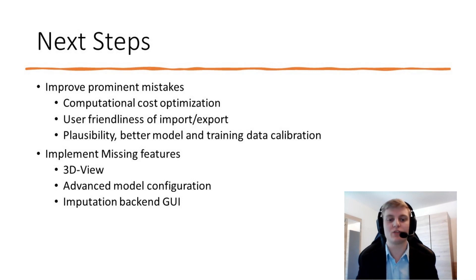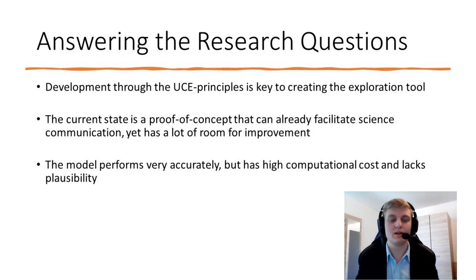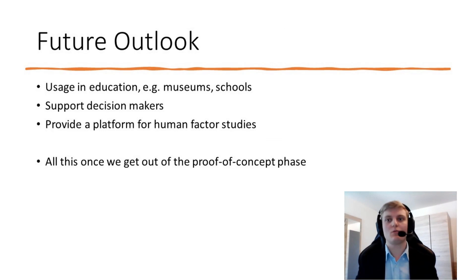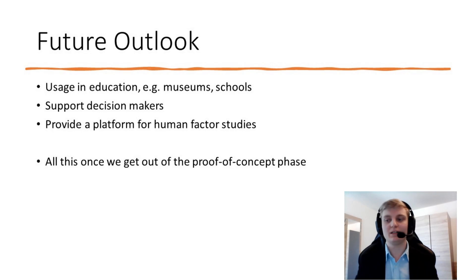Now let us answer the research questions. Such a project can only be developed by people like us — who aren't strict experts in geography and biology — using user-centered engineering principles, working tightly together with experts in the field. The current state of our solution is clearly a proof-of-concept. While it can already facilitate science communication to some degree, it still has a lot of room for improvement. The model performs very accurately but has high computational cost and lacks plausibility. Looking ahead, we think about using the software in education, for example in museums or schools, as a platform for human factor studies, and to support decision-makers in visualizing the drastic land-use changes occurring over the years.